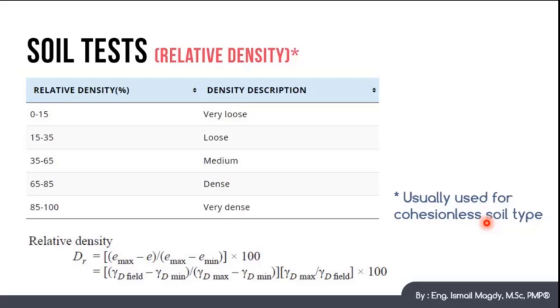Here, we can see in this table, if the relative density is between 0 up to 15, it means that the soil is very loose, and between 15 to 50, it is considered to be loose, and it keeps getting denser till we finally reach 85 to 100, where the soil is very dense.